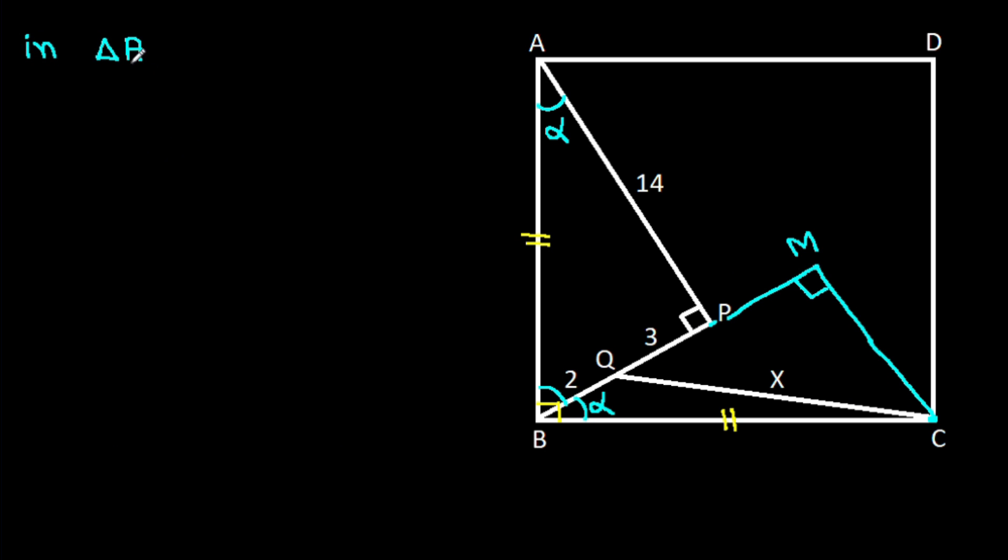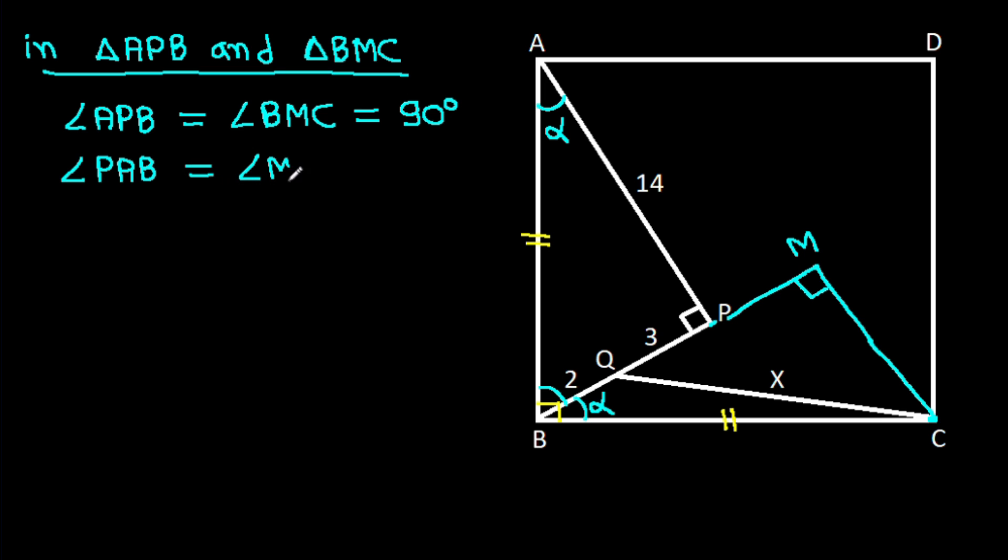In triangle APB and triangle BMC, we have angle APB is equal to angle BMC, that is 90 degrees. And angle PAB is equal to angle MBC, that is alpha. So triangle APB will be congruent to triangle BMC.